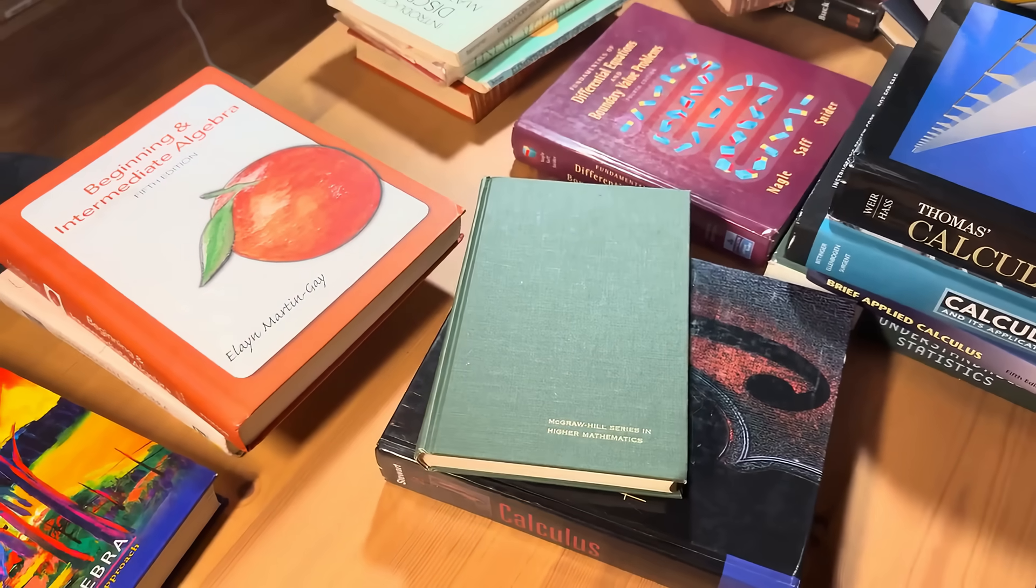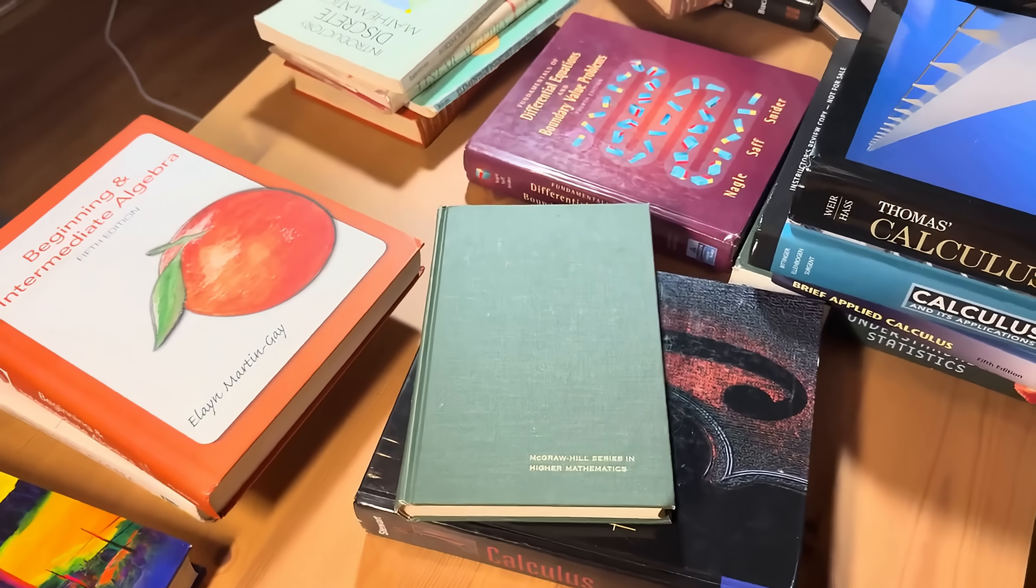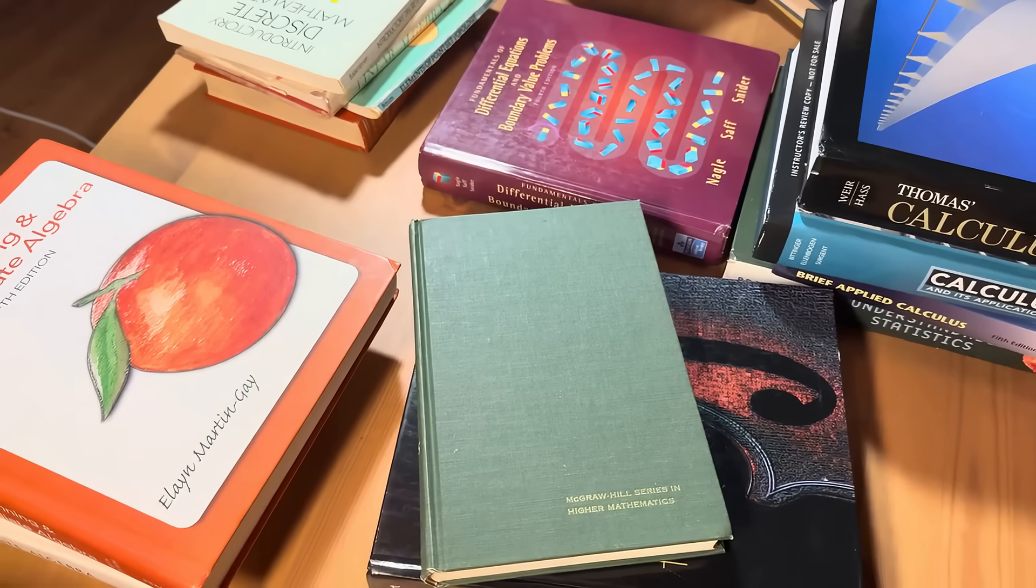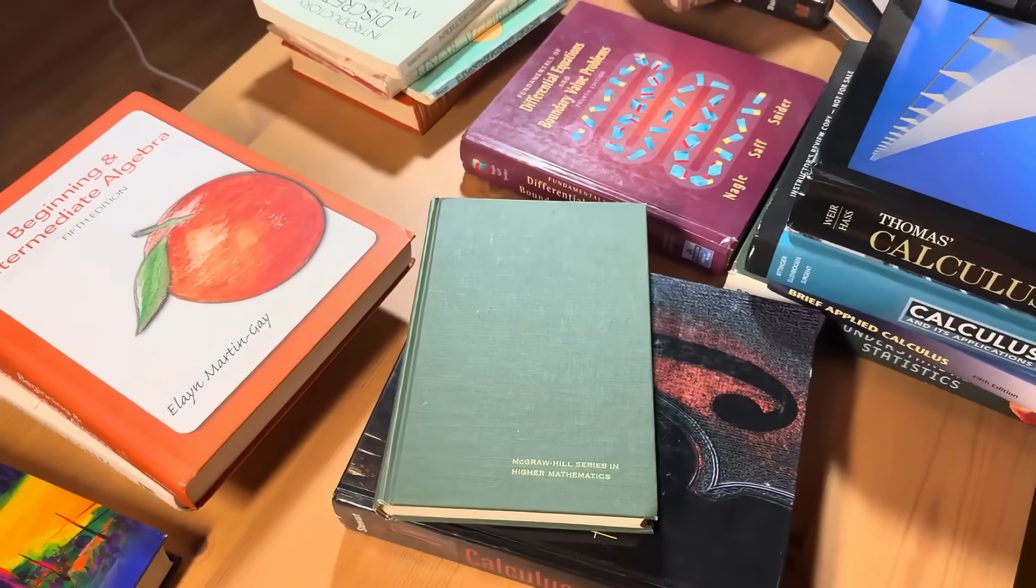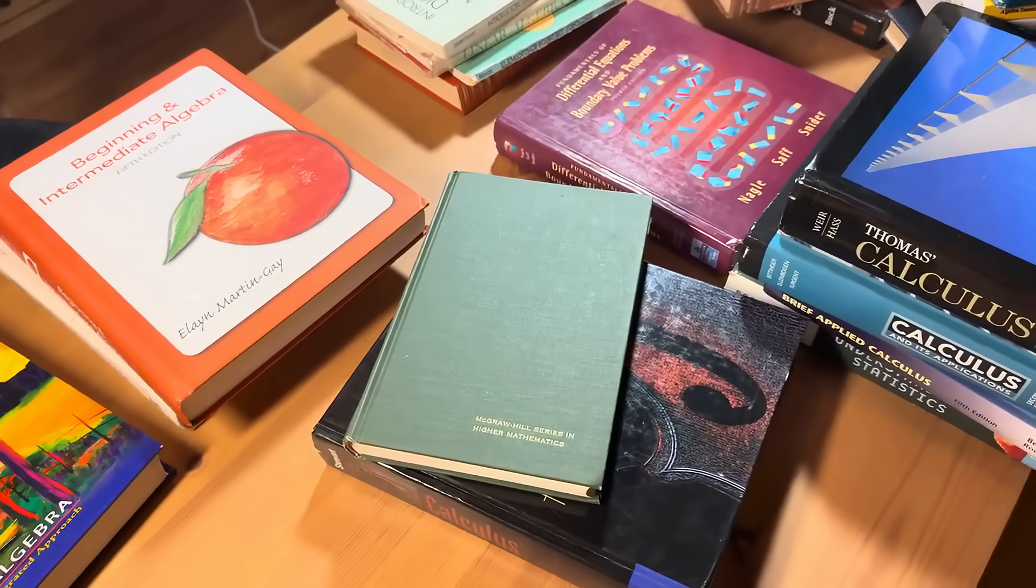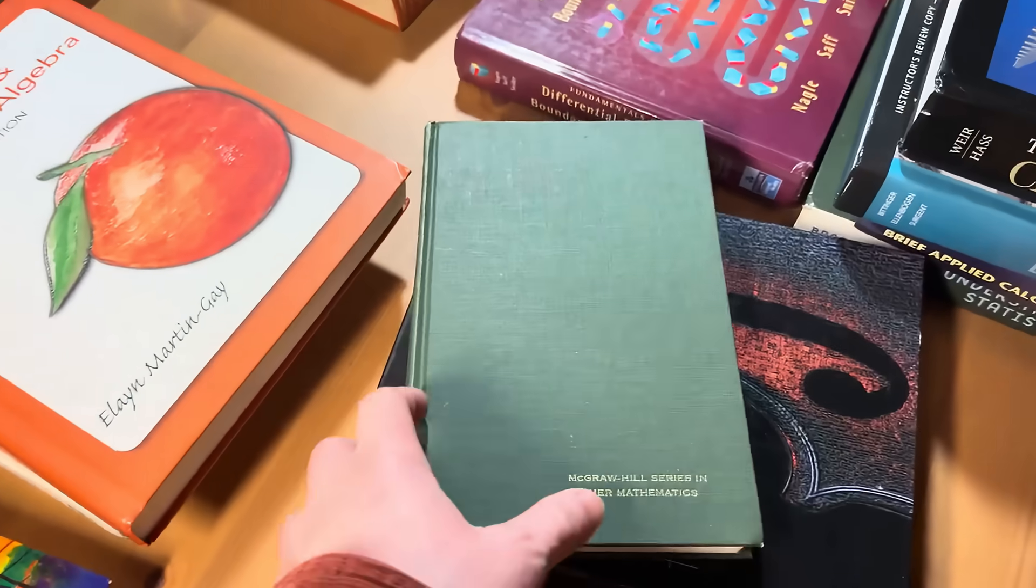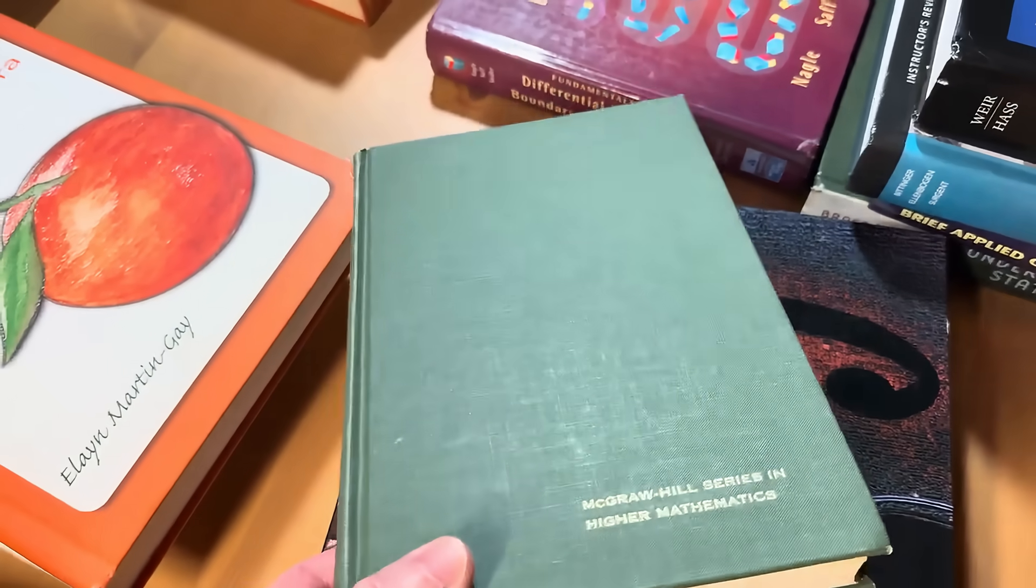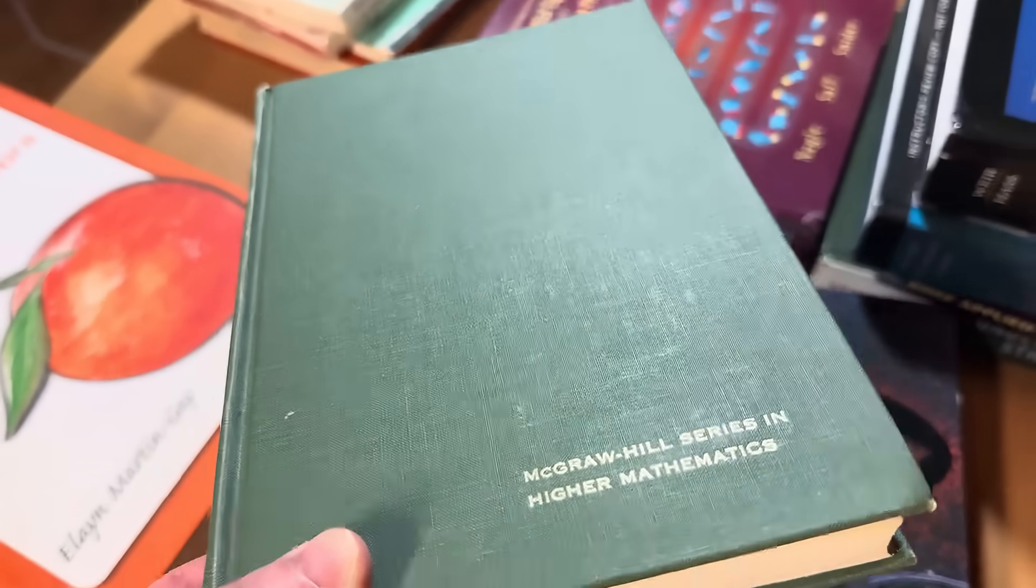Hello everyone. In today's video we are going to look at a very famous math book. This book is famous and it actually has a nickname. It is known as Papa Rudin. It's this green book right here. This is actually the first edition too which is pretty cool.